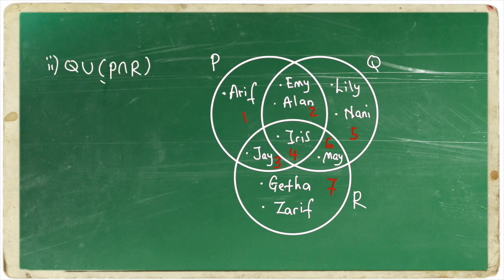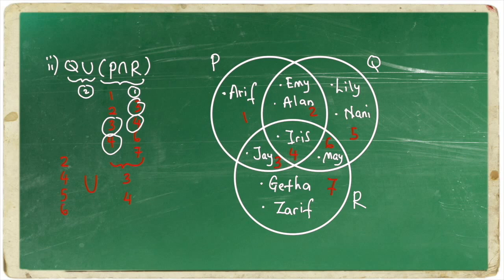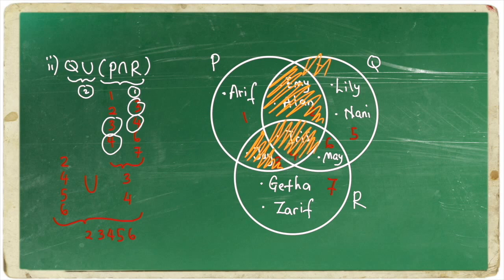Now, let's have a look at the next question. Remember, we need to do the one in the bracket first and then whatever comes later. So, P and R intersects which are the same. So, we have 3 and 4. Next, we combine it with Q. So, the final answer is 2, 3, 4, 5 and 6. So, you only shade the region with those numbers: 2, 3, 4, 5 and 6.